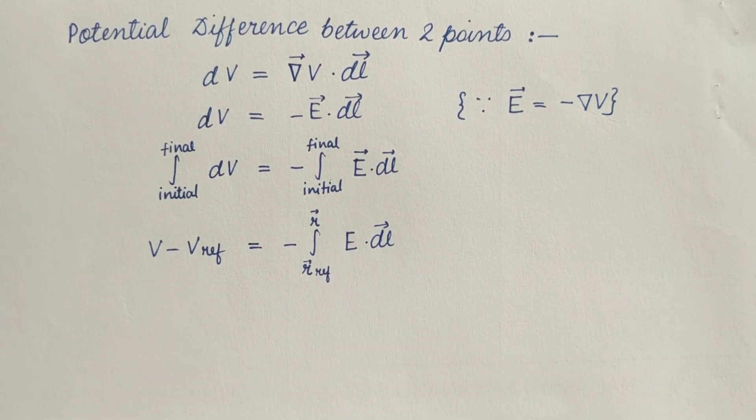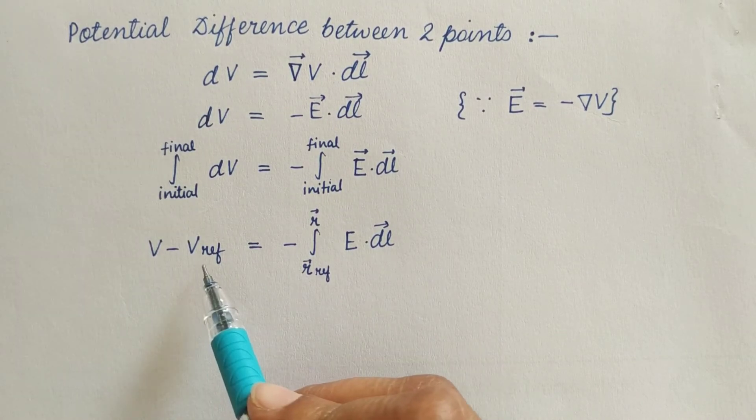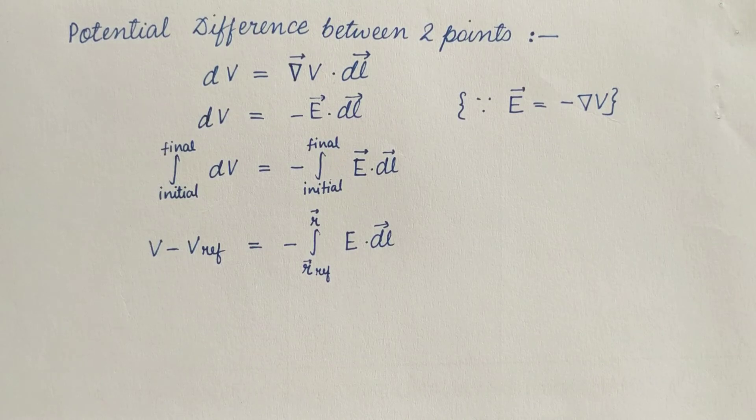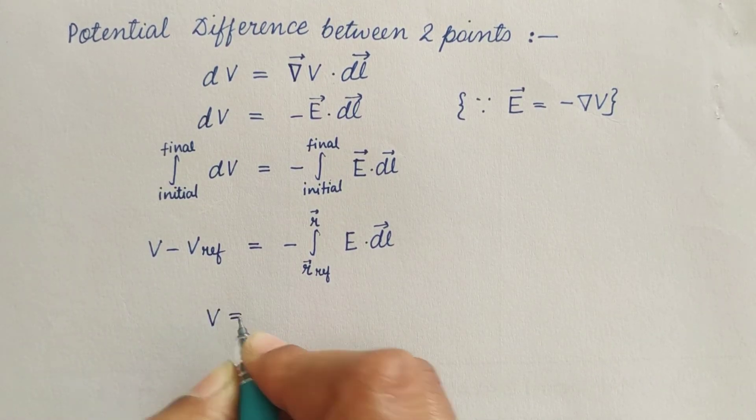Here the choice of reference point is arbitrary. Generally V reference is taken as zero at the reference point for convenience. Therefore we can write it as V equals this.